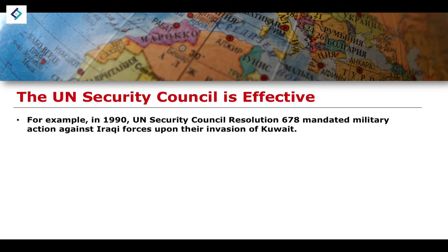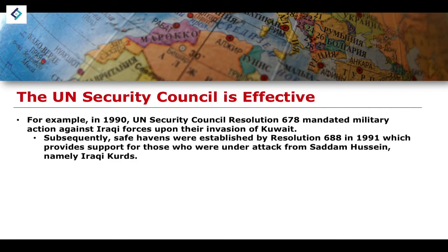For example, in 1990, UN Security Council Resolution 678 mandated military action against Iraqi forces upon their invasion of Kuwait — an easy-to-remember resolution for an exam. Subsequently, safe havens were established by the UN Security Council in Resolution 688 in 1991, providing further support for those under attack by Saddam Hussein, namely Iraqi Kurds.